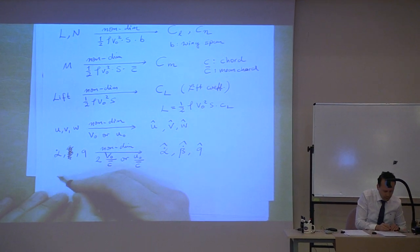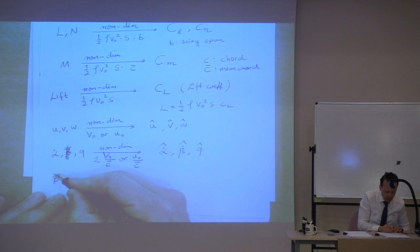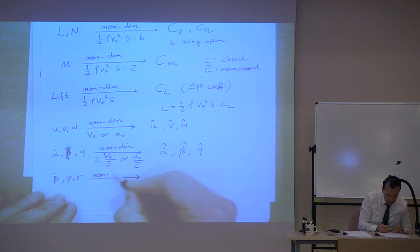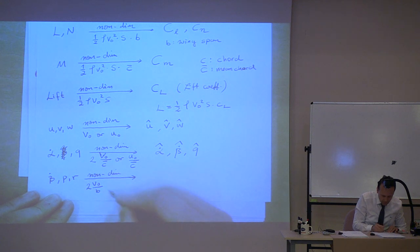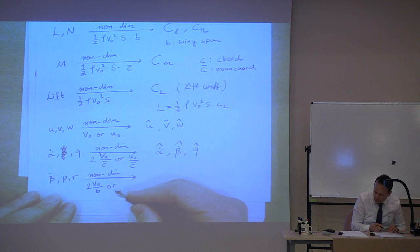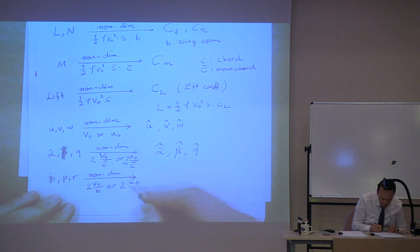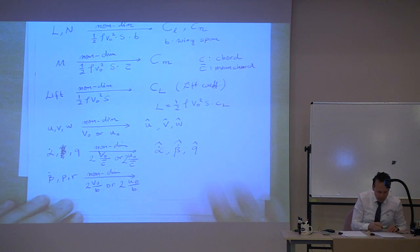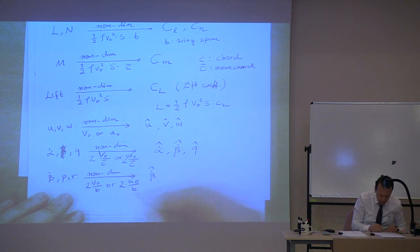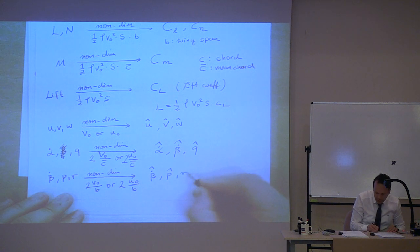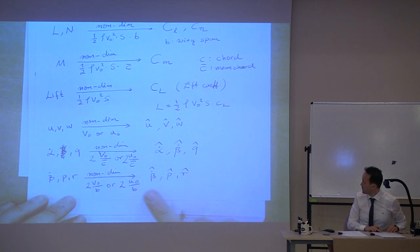For the lateral ones, basically beta dot, P and R, the non-dimensionalization is like this: 2U0 divided by B — there's a 2 here too, it was missing. 2U0 divided by B, where B is the span. So this would be P-hat and this would be R-hat. Please correct this in your notes.